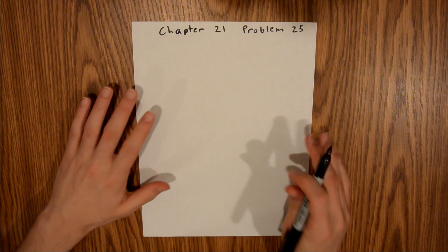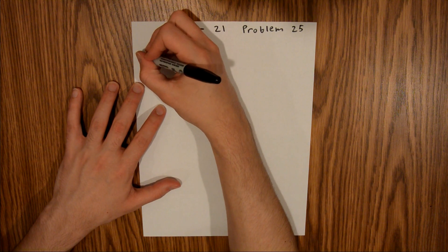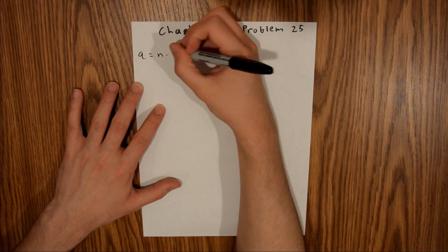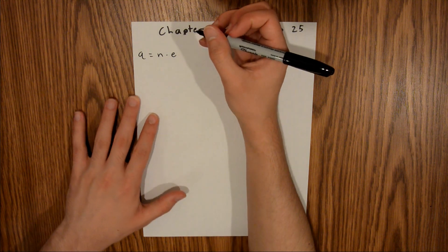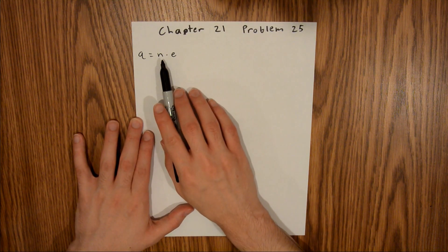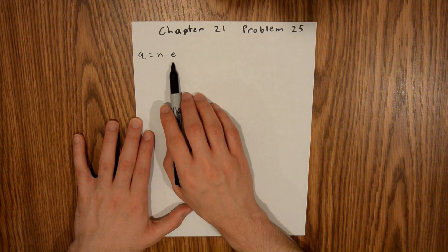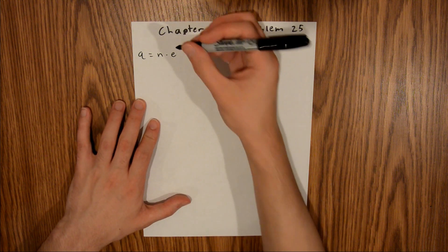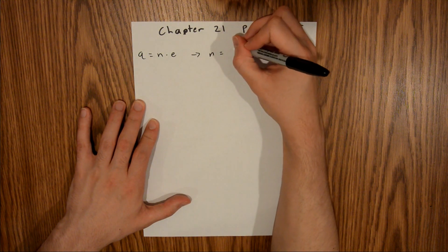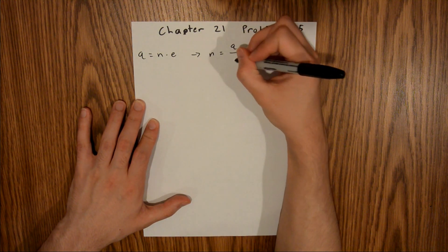We know that total charge is equal to the number of electrons times the charge of an electron. Since we are asked to find how many electrons, we are looking for n. We can divide both sides by the charge of an electron, and that will give us the number of electrons is equal to the total charge divided by the charge of an electron.